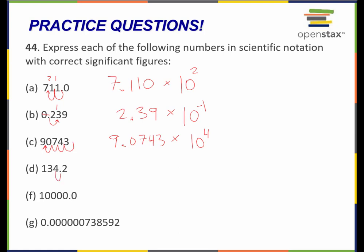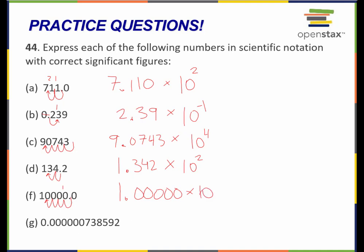This next one: I have to move the decimal over two spots to the left. All of these numbers are significant, so this becomes 1.342 times 10 to the positive 2. Let's do the next one. I move this over 4 spots. All of these zeros are significant — there's a decimal point here, and so these are trailing zeros that come after a decimal point. If there's a decimal point, they're all significant. So this becomes 1.000000 times 10 to the 4th.